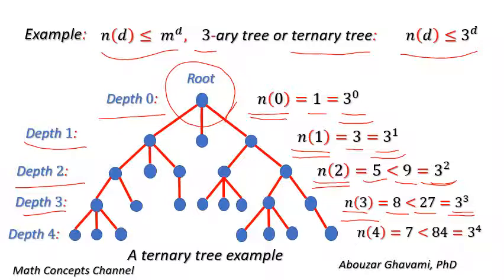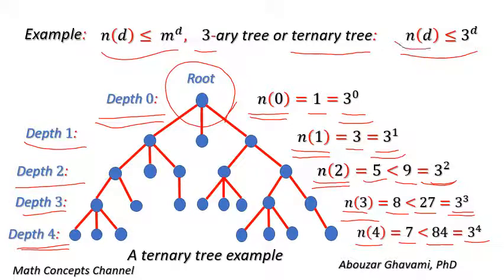In depth 4, we have 7 nodes, and 7 is less than 81, and 81 equals 3 to the power of 4. Thus, for all depths from 0 to 4 in this example, we have the equation N(D) is less than or equal to 3 to the power of D.